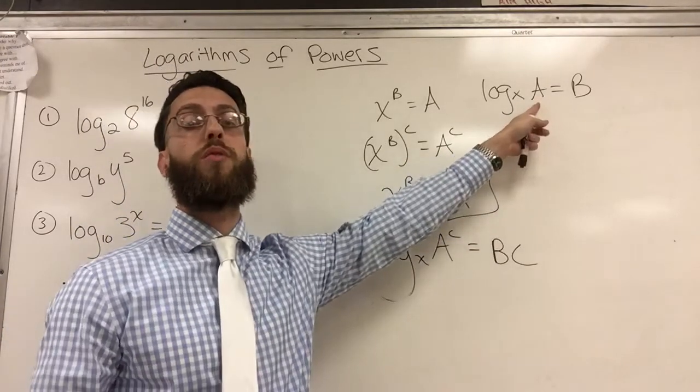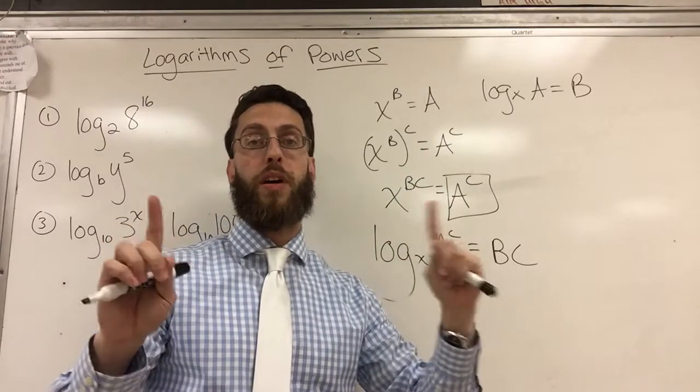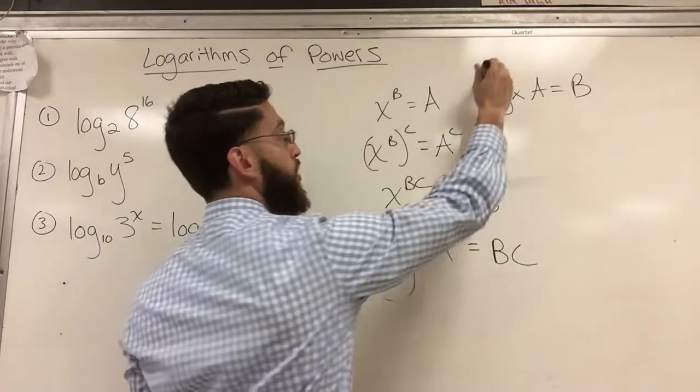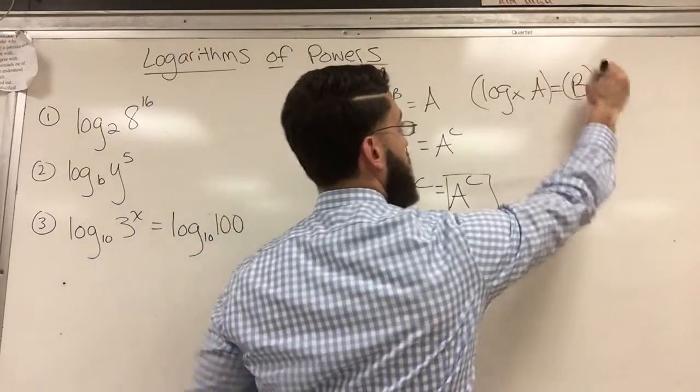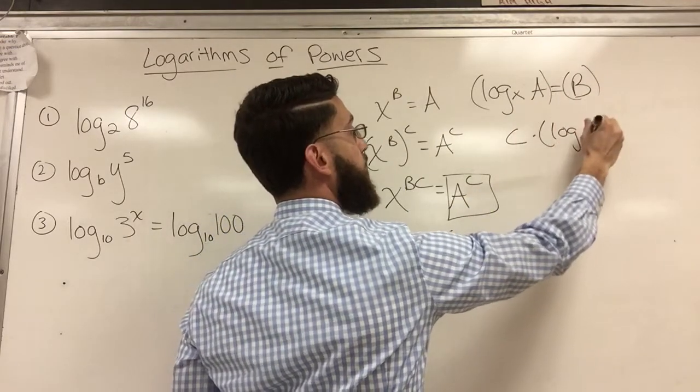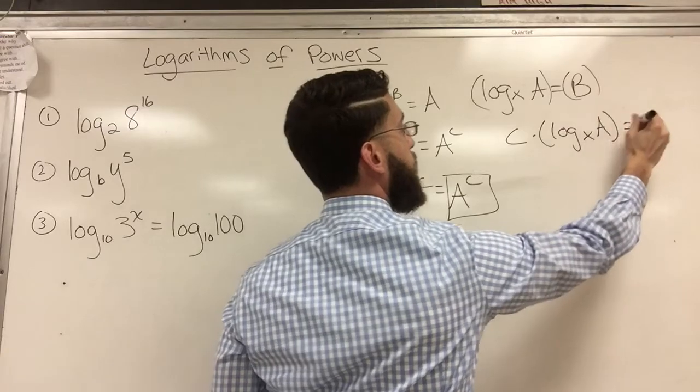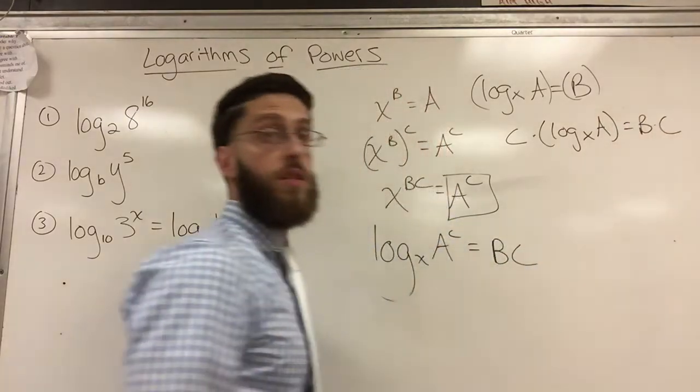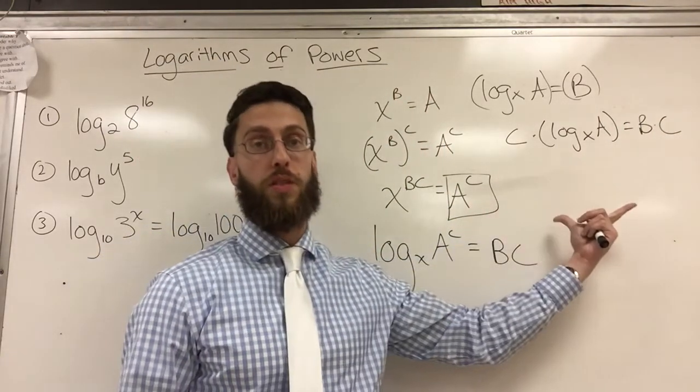So again, it's an equation. I can do whatever I want. So what I want to do is multiply both sides by c. So if I multiply, actually I won't do it here. I don't want to confuse you. So I'll do it below. So I have c times the log base x of a equals b times c. So I did the same thing to both sides, so it's still equivalent.